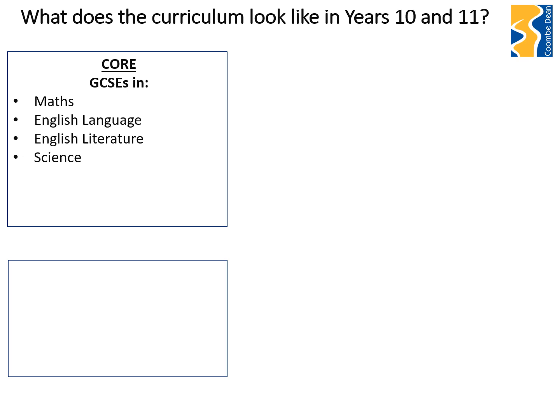Moving away from science and getting back to our core curriculum: further to the GCSEs in Maths, English and Science, we have Personal Development, or PD, and Physical Education, PE. Though these subjects are not award-bearing — you don't gain a qualification from the study — they are important aspects of students' wider development and do form a part of this core compulsory curriculum. All of our students will study these things.